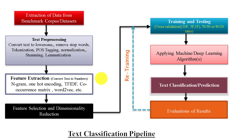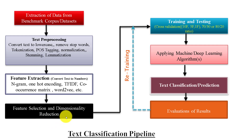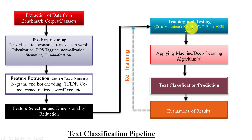After conversion of text into numbers, if the dimensionality of the extracted features is high, we can apply feature selection and dimensionality reduction techniques. There are several techniques available in machine learning like Principal Component Analysis and T-SNE. The next step is dividing data into training and testing. We can use cross-validation, which involves 10-fold, 5-fold, or we can simply divide the data into 70-30 or 80-20 ratio for training and testing.